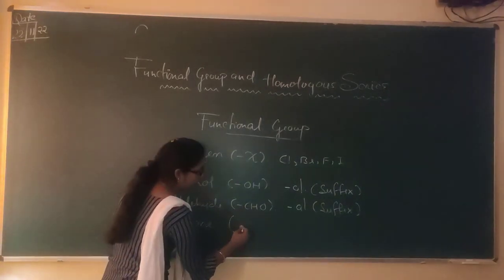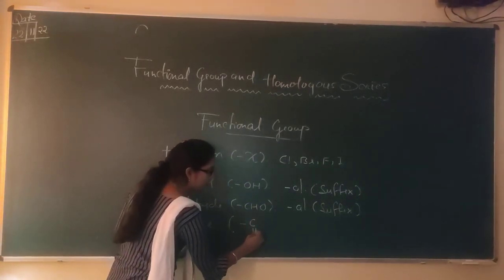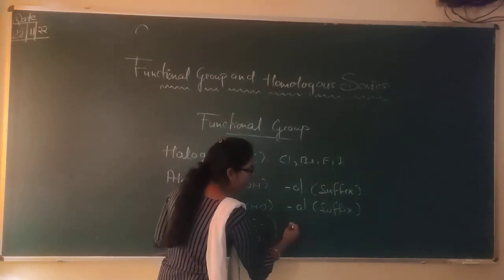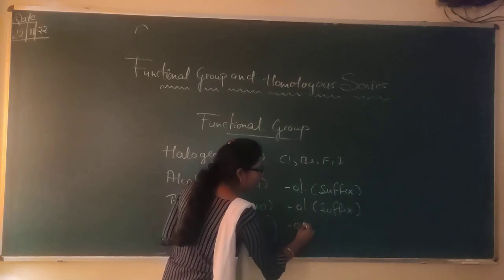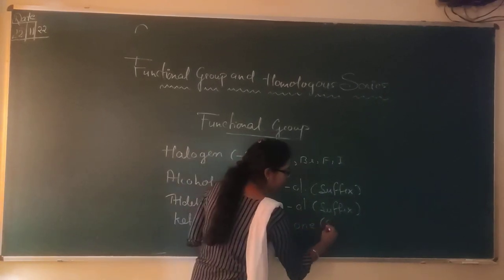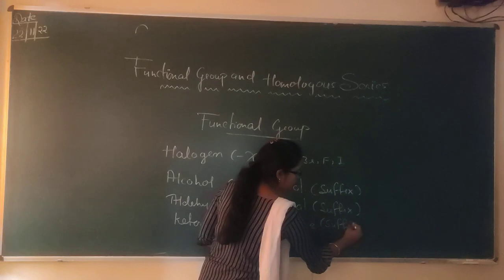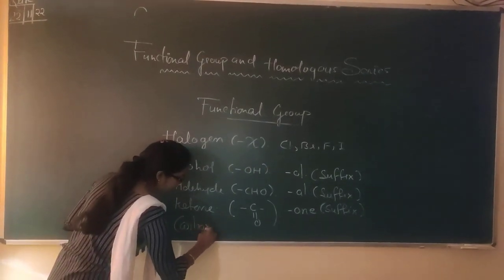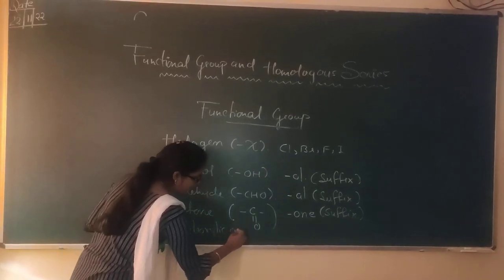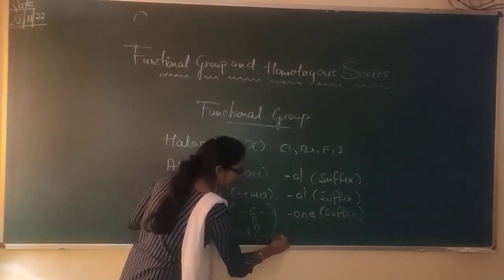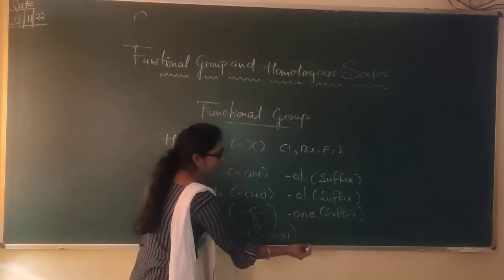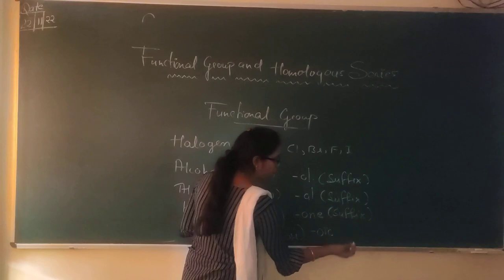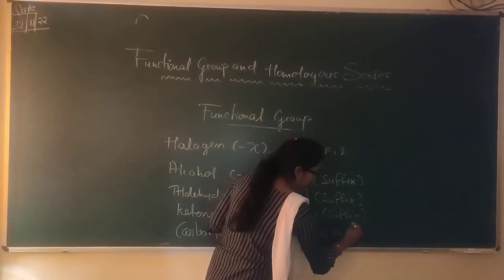Ketone ka aap bolte ho jab aapko kisi bhi compound mein C double bond O dekhne ko mile. In ketone, aap hamesha 'one' as a suffix use karte ho. And last one is carboxylic acid. Carboxylic acid is represented by C double bond OH, and jab bhi kisi bhi compound mein carboxylic acid hoga, toh as a suffix aap 'oic acid' use karo ge.